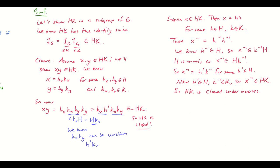So at this point we've shown that HK is a subgroup of G. And actually, to get that we only needed the fact that H was normal — we didn't need the fact that K was normal. So you may be wondering where that's going to come in. You will see in the next video where we prove that there is an isomorphism.